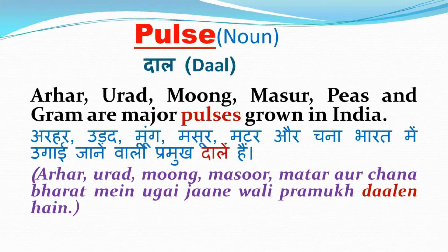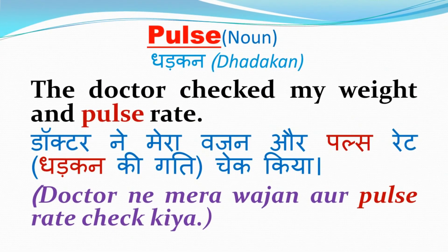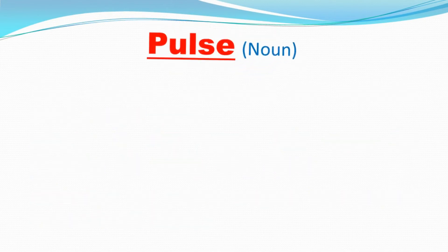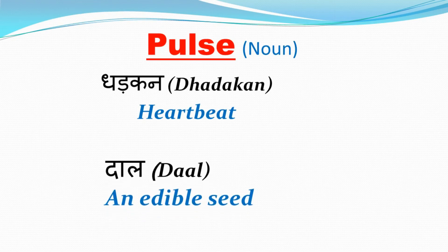अर्हर, उरद, मुंग, मसूर, मटर और चना भारत में उगाई जाने वाली प्रमुख दालें हैं. The doctor checked my weight and pulse rate. Doctor ने मेरा वजन और pulse rate check किया. तो इस तरह से pulse के दो अर्थ हुए — धड़कन और दाल.